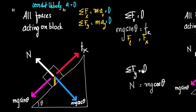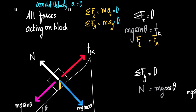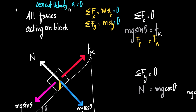Now sigma Fy equal to zero means forces acting upwards equal forces acting downwards. The only force acting upwards is normal reaction N, and the only force acting downwards is mg cos theta. Therefore N is equal to mg cos theta, and Fk is equal to mg sin theta.